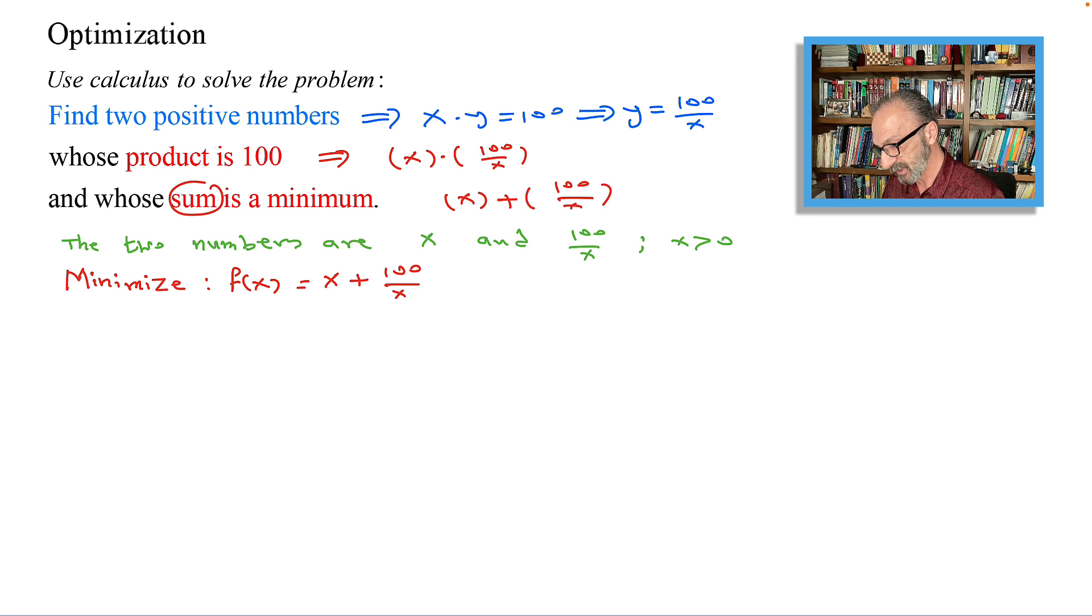To minimize this, we're going to be using calculus, as mentioned. So let's find the first derivative. The first derivative: derivative of x will be 1, derivative of 100 over x is minus 100 over x squared. If you combine these two numbers with a common denominator x squared, rewriting 1 as x squared over x squared, I have the following.